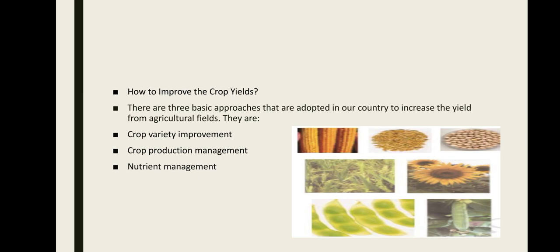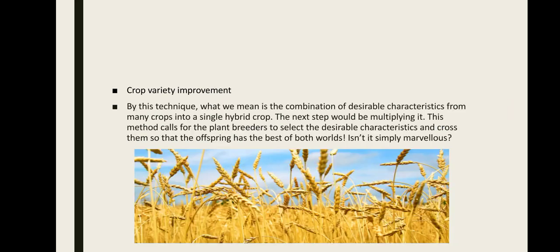How to improve the crop yield? There are three types: crop variety improvement, crop production management, and nutrient management. In crop variety improvement, we combine two desirable characters from many crops into a single hybrid crop, then multiply it. The plant breeder selects desirable characteristics and crosses them so that the offspring has the best of both parents.